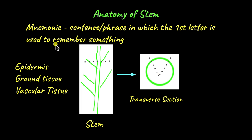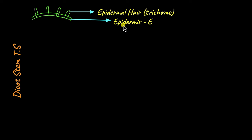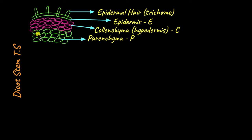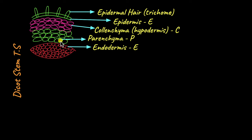We are going to use a mnemonic device to remember how to draw this pie-shaped image of a dicot stem. The epidermis is the first, outermost layer. In dicots, the epidermis has epidermal hair also called trichomes — we use the letter E to remember epidermis. Following the epidermis is a layer called hypodermis, which in dicots is made up of colenchyma. The hypodermis is part of the cortex, which is split into three layers: hypodermis, a middle parenchymatous layer, and the innermost layer called the endodermis.